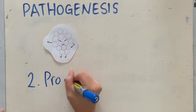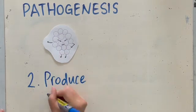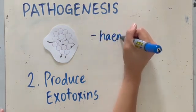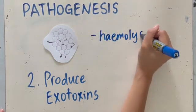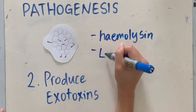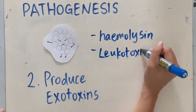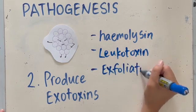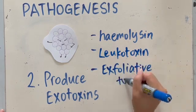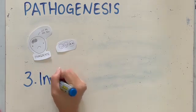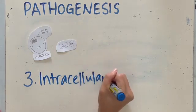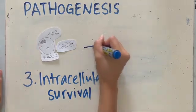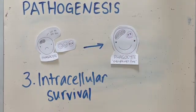It also produces exotoxins. Hemolysins cause hemolysis of erythrocytes; leukotoxins are leukotoxic to polymorphonuclear white blood cells, which helps evade the immune system; and exfoliative toxins that cause exfoliation, damaging skin integrity, which plays an important role in canine pyoderma. Staph also survives even after phagocytosis, evading the immune system and antibiotics, resulting in persistence of infection in some cases.